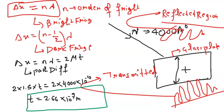Always remember: when light is incident on a glass plate, there are two regions — reflected and transmitted. In the transmitted region, for bright fringes delta x = n lambda, and for dark fringes delta x = (n − 1/2) lambda. For the reflected region, just reverse it: for bright fringes delta x = (n − 1/2) lambda, and for dark fringes delta x = n lambda.